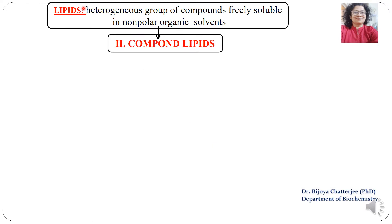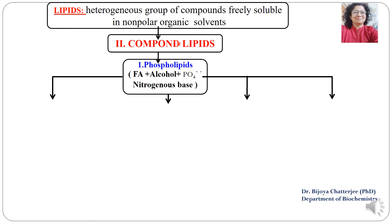Now we come to the classification of phospholipids. Lipids are a heterogeneous group of compounds readily soluble in non-polar organic solvents, and they are further classified into four classes. Today we are only going to discuss about the second class, which is compound lipids. Compound lipids are further classified as phosphorylated lipids and non-phosphorylated lipids. We will only discuss about phosphorylated lipids, also known as phospholipids. These phospholipids have a fatty acid group, an alcohol group, a nitrogenous base, and a phosphate group — because they have the phosphate group, they are known as phospholipids. These phospholipids are further grouped into four categories.